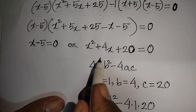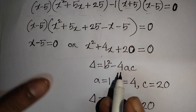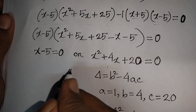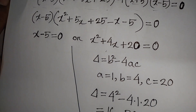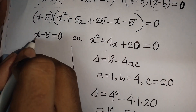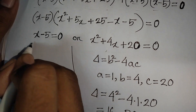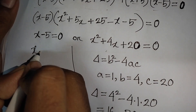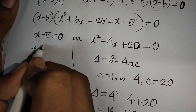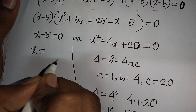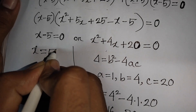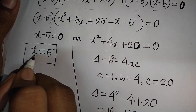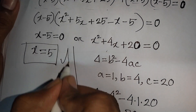So there is no real solution from the quadratic. Our final answer comes from x - 5 = 0, taking -5 to the right side gives x = 5. This is the value of x and our final answer.